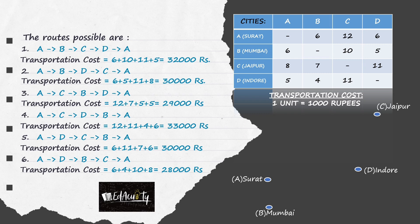Now, see that the minimum transportation cost is Rs 28,000, which is associated with the sixth route, i.e. A to D, D to B, B to C, C to A. This means that the factory should first transport from Surat to Indore, then from Indore to Mumbai, from Mumbai to Jaipur, and from Jaipur back to Surat.